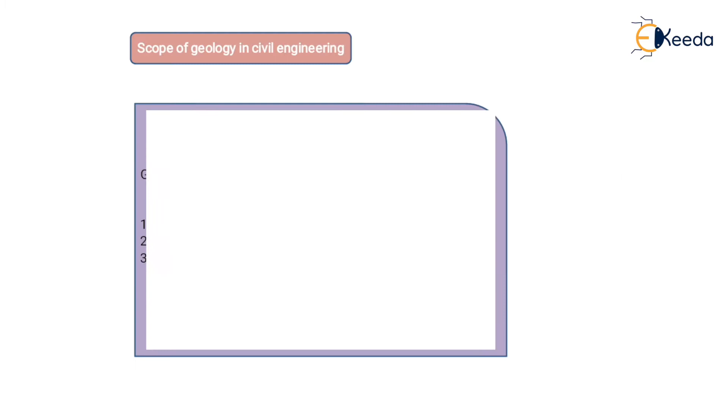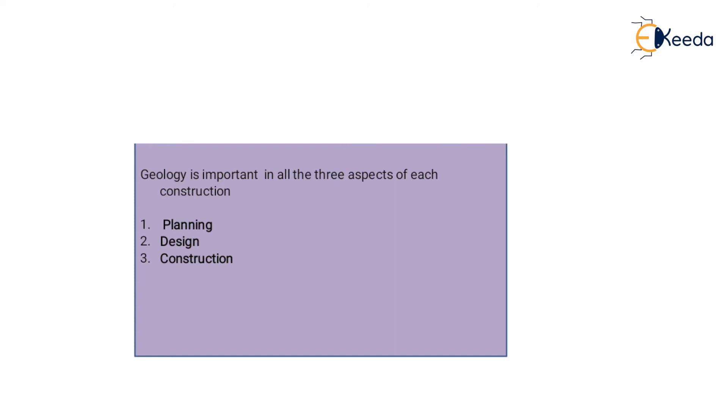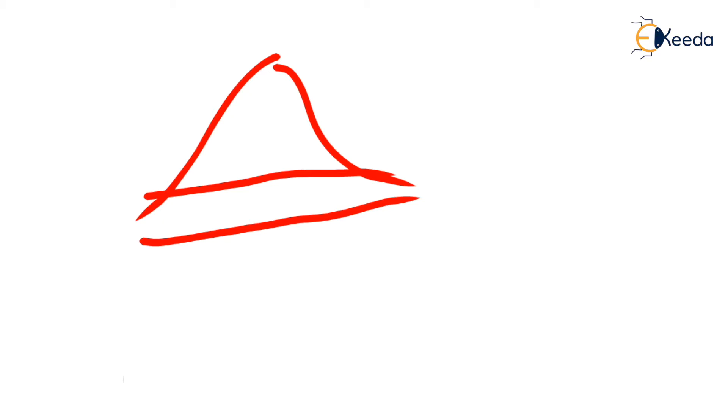For example, if you have a project to construct a tunnel through a hill, you cannot just drill directly. First, you need planning — find out which kind of rock is present in the hill. You drill and find out what material is present: perhaps sedimentary rock below, metamorphic rock in the middle, igneous rock above, and a small water table present.